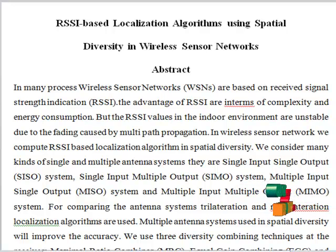In many wireless sensor network processes, localization is based on received signal strength indication (RSSI). The advantages of RSSI are in terms of complexity and energy consumption. But the RSSI values in the indoor environment are unstable due to the fading caused by multipath propagation.